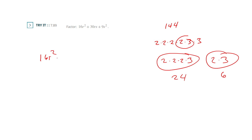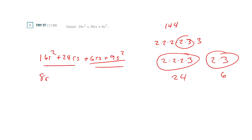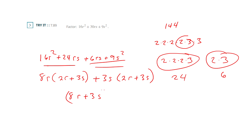So I'm splitting the middle as 6RS and 24RS. Now I've got four pieces — GCF at the front, GCF at the back. Out of the front I can pull out 8R, giving me (2R + 3S). Out of the back I'm taking 3S, and I get (2R + 3S). I've got my match: (8R + 3S)(2R + 3S). It doesn't matter which order you write them since we're multiplying two factors.